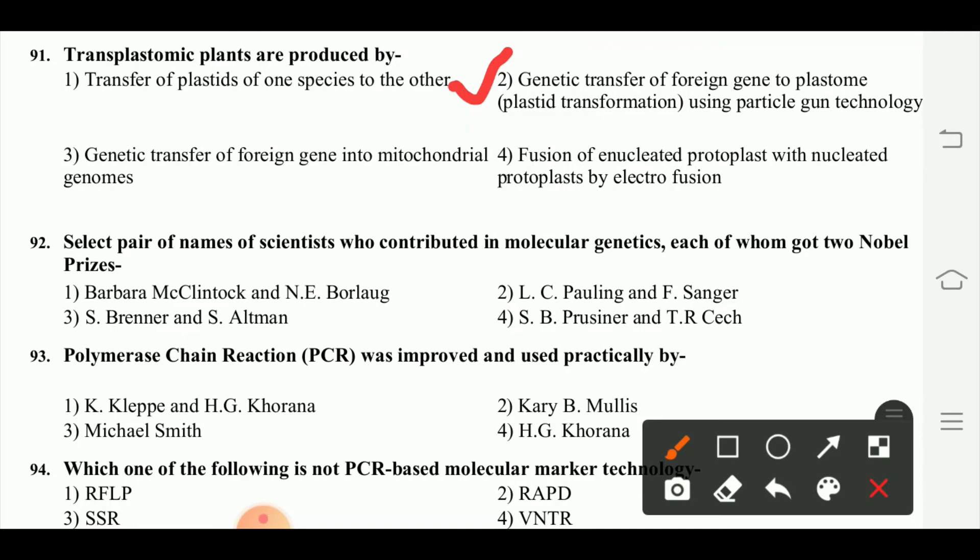Select the pair of scientists who contributed to molecular genetics, each of whom got two Nobel Prizes. The answer is L.C. Pauling and F. Sanger.